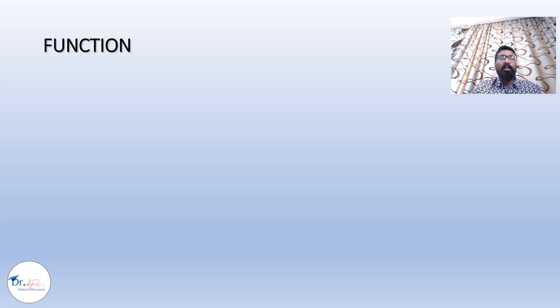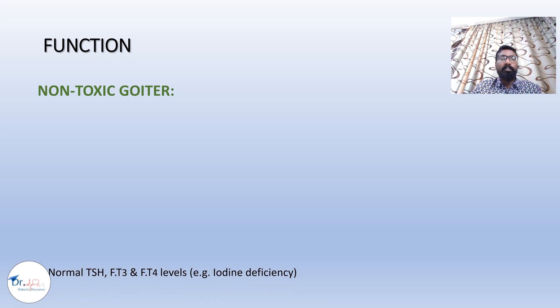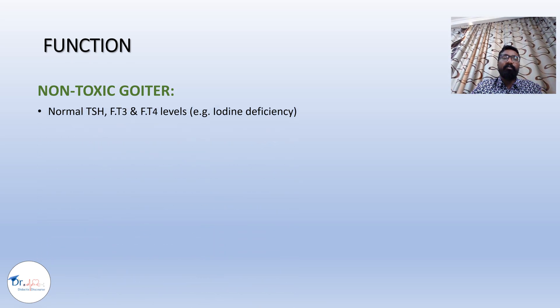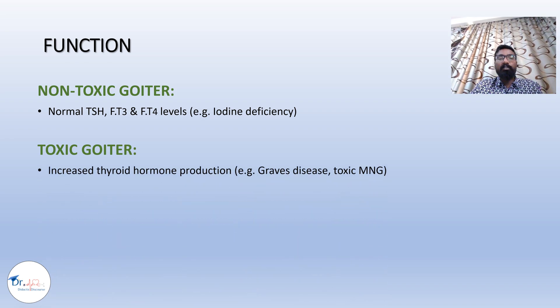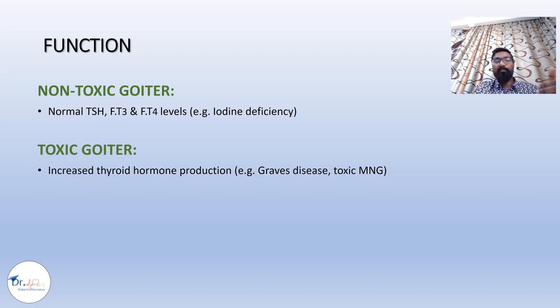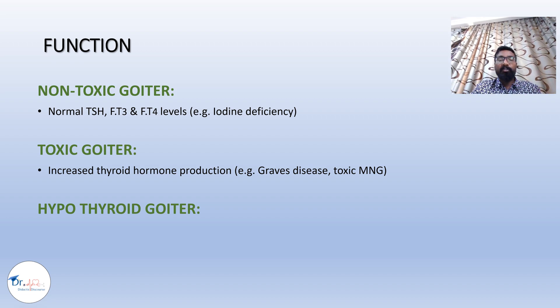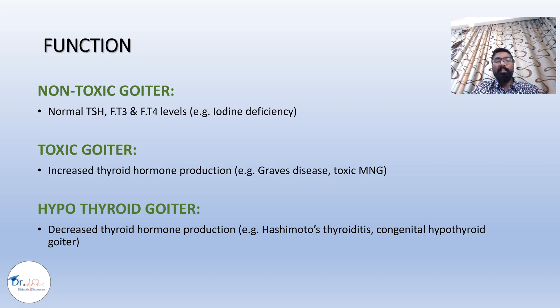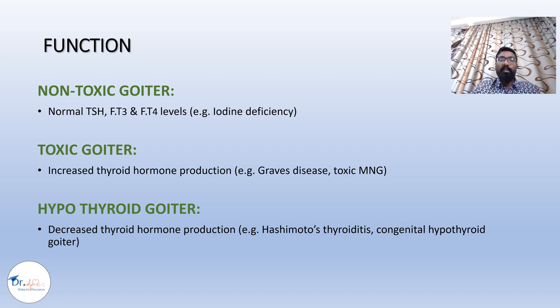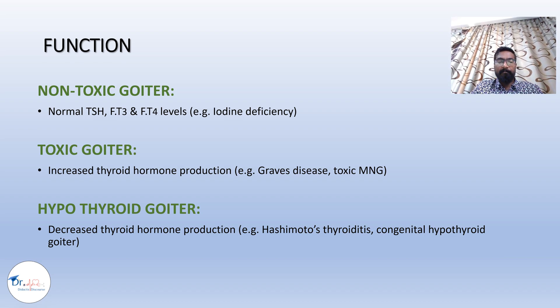The second classification is based on function. Non-toxic goiter: laboratory tests reveal normal TSH, free T4, and free T3 levels, as seen in iodine deficiency. Toxic goiter: there is increased thyroid hormone production — lab tests show elevated free T3 and free T4, seen in Graves disease and toxic multinodular goiter. Hypothyroid goiter: lab tests show decreased free T3 and free T4, seen in Hashimoto's thyroiditis — the most common cause of hypothyroidism — and congenital hypothyroid goiter.